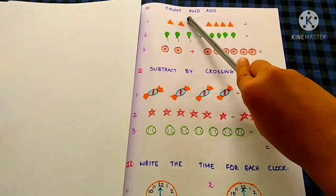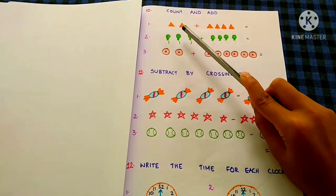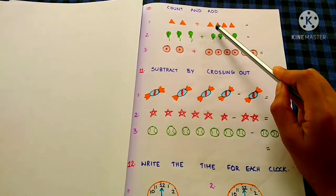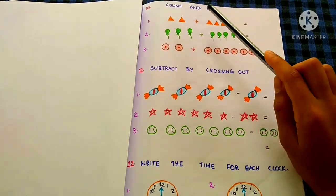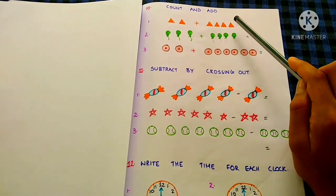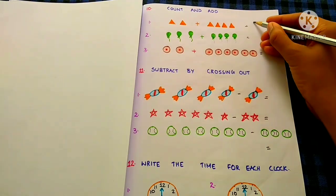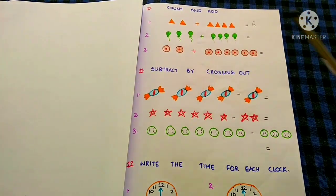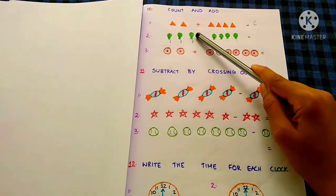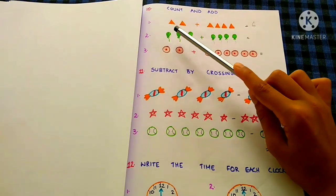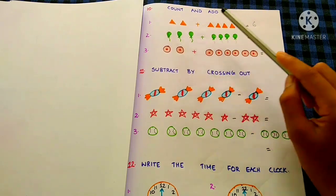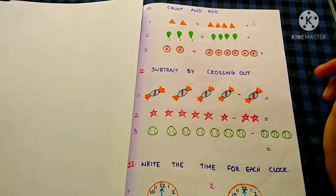Count and add. 1, 2, plus 1, 2, 3, 4 equals 1, 2, 3, 4, 5, 6. 1, 2, 3, plus 1, 2, 3, 4 equals 1, 2, 3, 4, 5, 6, 7.